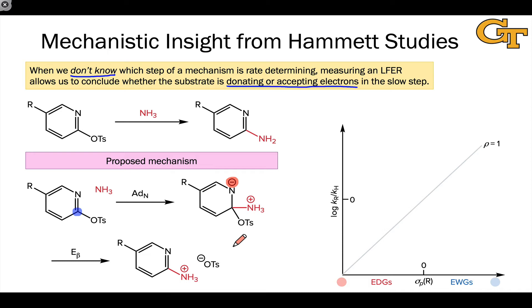You can see there's an ambiguity here. What's going to be the outcome of the Hammett study? We don't know—that's why we run the Hammett study in the first place.